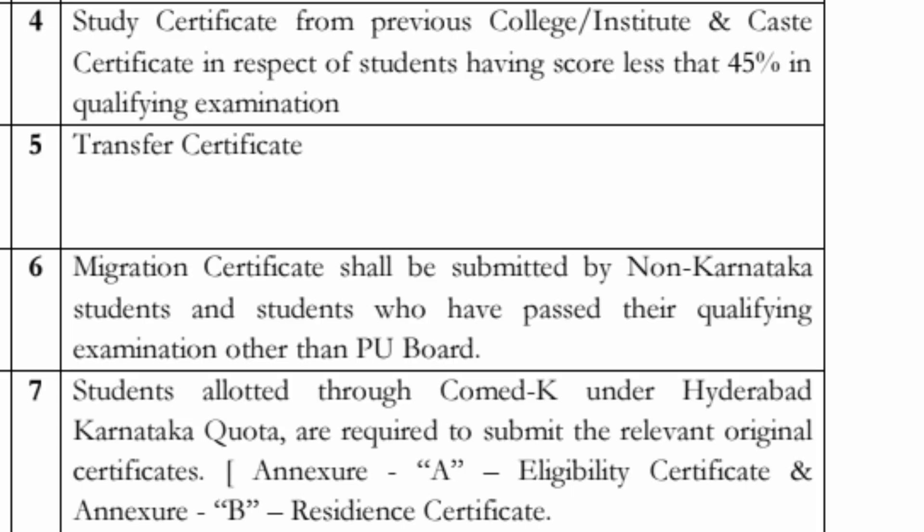The migration certificate shall be submitted by non-Karnataka students and students who have passed their qualifying exams outside the PU board — all schools will give you this. For students allotted through COMED-K under the Hyderabad-Karnataka Region quota, KKR or HKR students also need to bring the relevant certificates — Annexure A, the eligibility certificate, and Annexure B, the residence certificate. Those certificate templates are available in your brochure.